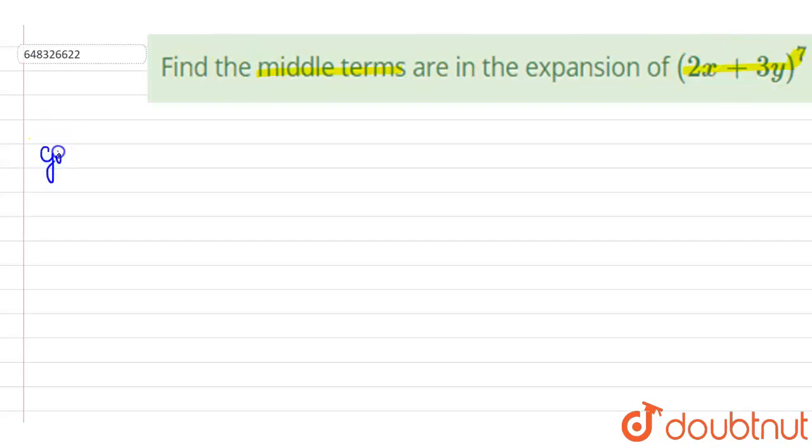So we are given an expansion here which is (2x + 3y)^7. So if you see here, n is equal to 7 which is an odd number. So when n is an odd number, we have 2 middle terms.